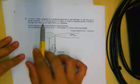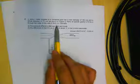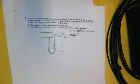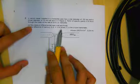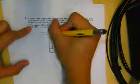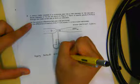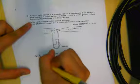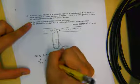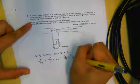Next, question number 2. We have a venturi meter with inlet and outlet diameters 150 mm and 75 mm respectively. Petrol of specific gravity 0.78 flows through the meter at a rate of 39.6 liters per second. We are asked to calculate the pressure difference between the inlet and the outlet. We apply Bernoulli across points 1 and 2.